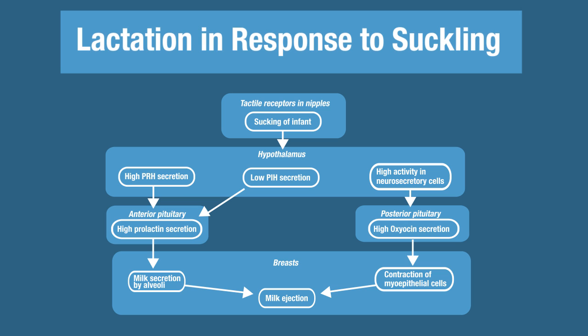This is a really nice flowchart that shows how both hormones are involved in lactation. There's a tactile response in the nipples — this is the stimulus caused by the suckling of the infant — which stimulates the hypothalamus. The hypothalamus then synthesizes and secretes prolactin-releasing hormone, but not prolactin-inhibiting hormone. It also increases the activity of the neurosecretory neurons, which stimulate the posterior pituitary to release oxytocin.